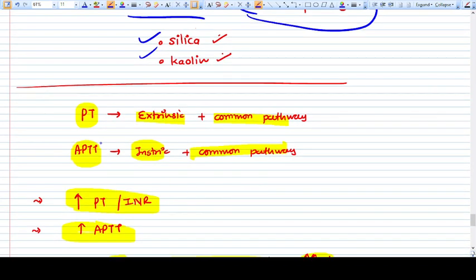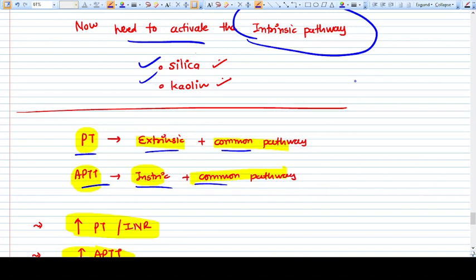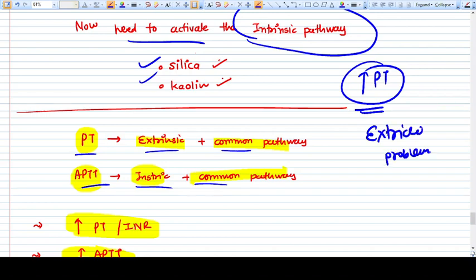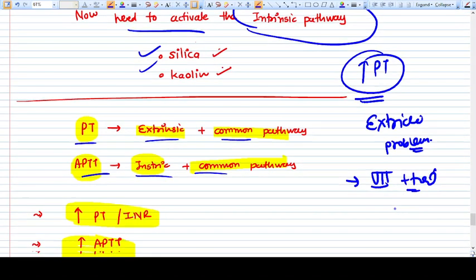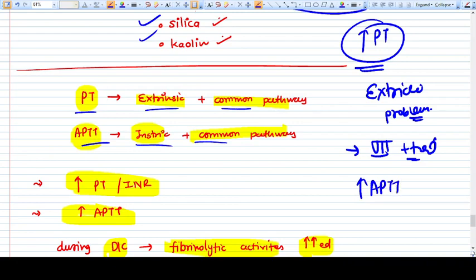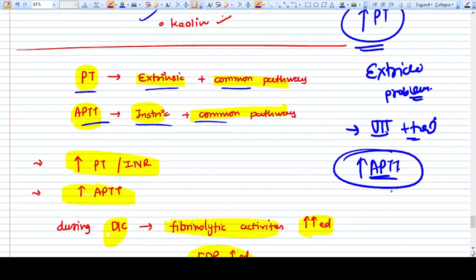PT measures the extrinsic and common pathway, APTT measures the intrinsic and common pathway. If you have only PT increased, that means the extrinsic pathway has a problem, and there will be factor deficiency of factor 7 or tissue factor.